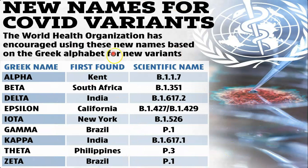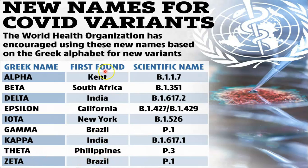The WHO has encouraged using Greek alphabet names for COVID-19 variants. Alpha was first found in Kent, scientific name B.1.1.7. Beta was found in South Africa. Delta was first found in India. Epsilon was found in California. Iota in New York. Gamma in Brazil. Kappa in India. Zeta in Brazil. The WHO proposed these Greek alphabet-based names for all new variants of COVID-19.